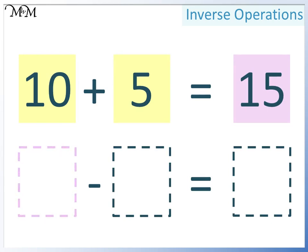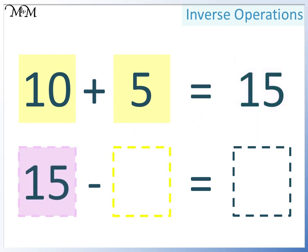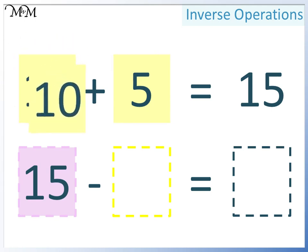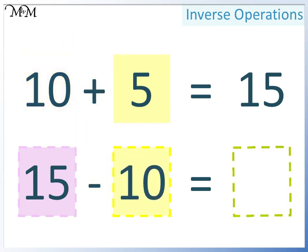The largest number is 15. In the next space, we can have either of the two smaller numbers. Let's choose 10. Finally, we can move the 5 into the last space. 15 take away 10 equals 5.